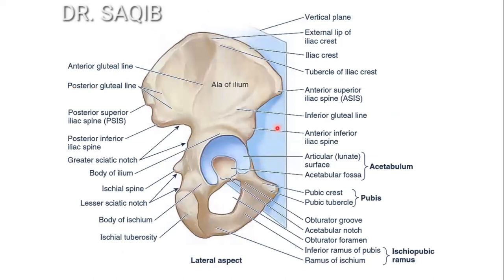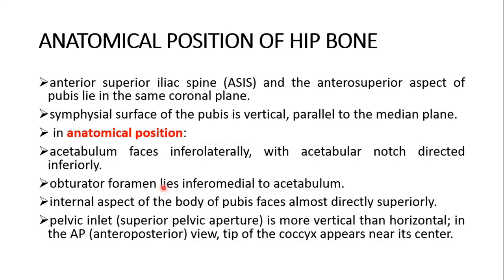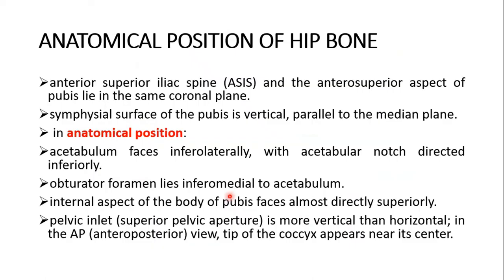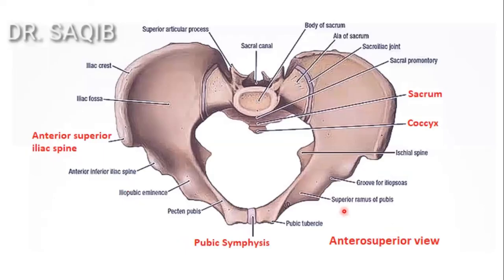In anatomical position, the acetabulum faces infrolaterally with the acetabular notch directed inferiorly. The obturator foramen lies infromedial to the acetabulum. The internal aspect of the body of the pubis faces almost directly superiorly. The pelvic inlet, or superior pelvic aperture, is more vertical than horizontal. In the anteroposterior view, the tip of the coccyx appears near its center.